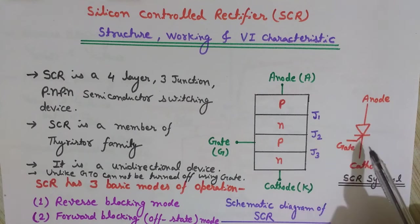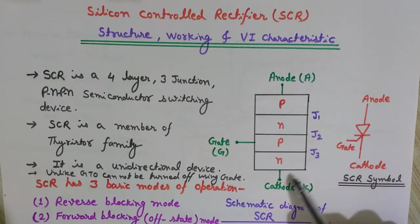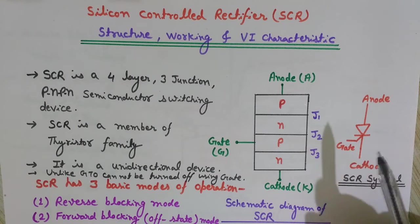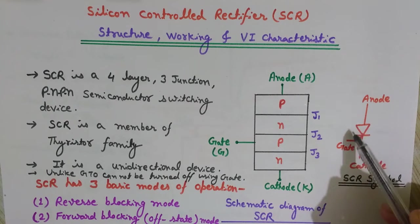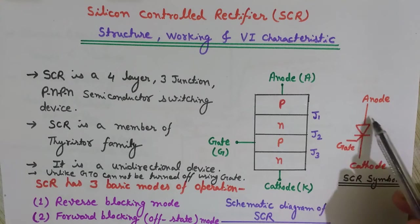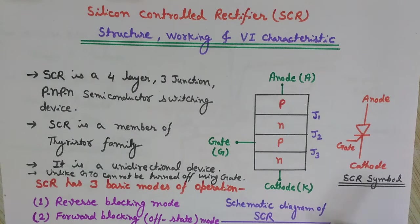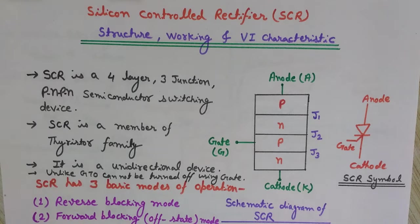Here is the anode, here is the cathode, and this one is the gate. The gate is used to control it. As you can see, this symbol is quite similar to the symbol of a diode, but the extra part here is the gate. This SCR is the most prominent member of the thyristor family.